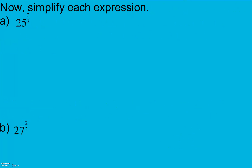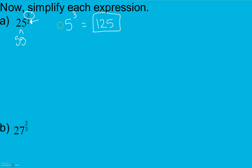Feel free to pause here and give these a try. We're looking for what number times itself two times gets us to 25. 25 is 5 times 5, so our base is 5. Now we use the numerator to tell us how many times we have that base of 5 — here it's 3 — and we get 5 cubed, which is 125. That is the same as 25 to the 3/2 power.